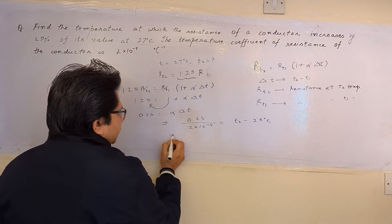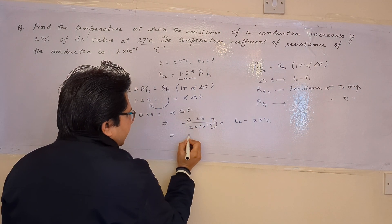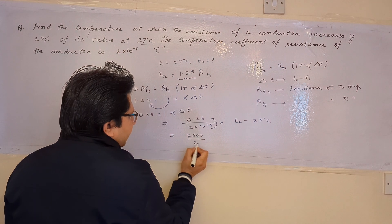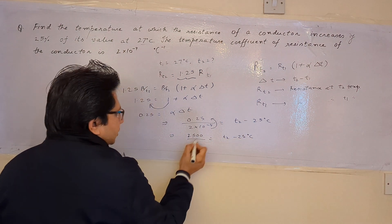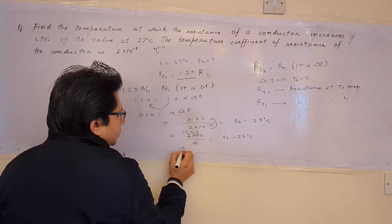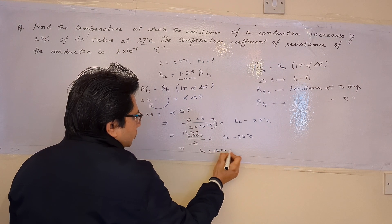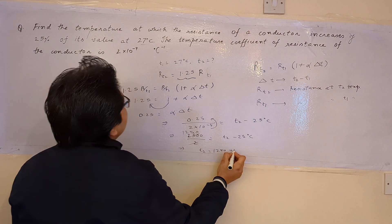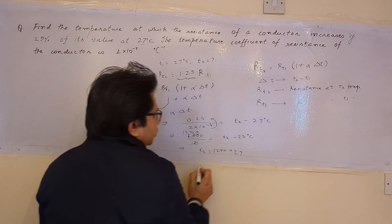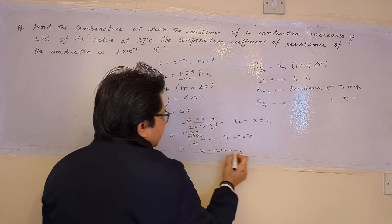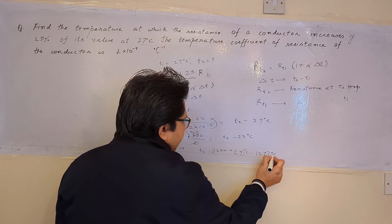After solving, 10 to the power 4 goes to the numerator and we get 2500 divided by 2, so delta T equals T2 minus 27 degree Celsius equals 1250. Therefore T2 equals 1250 plus 27 degree Celsius.